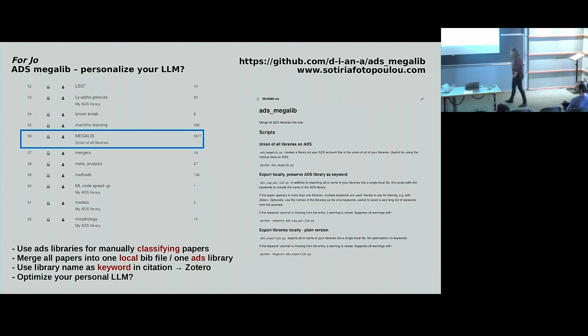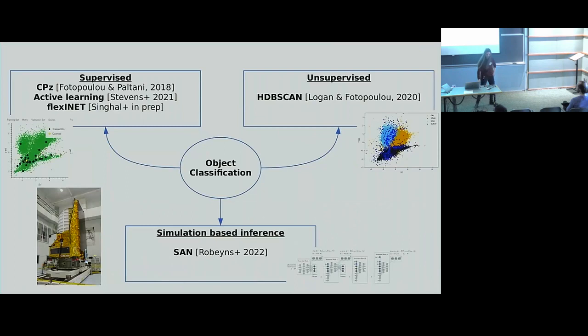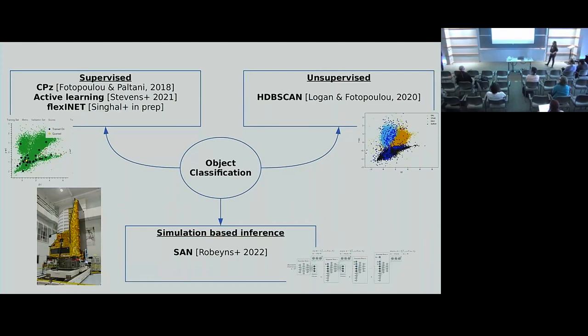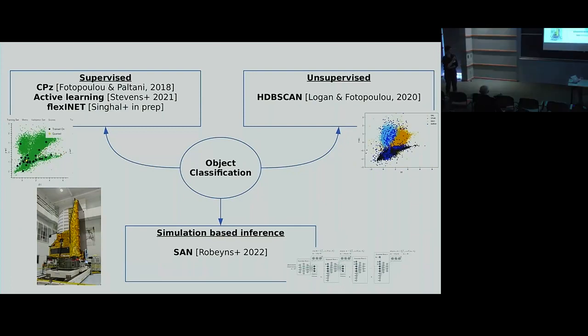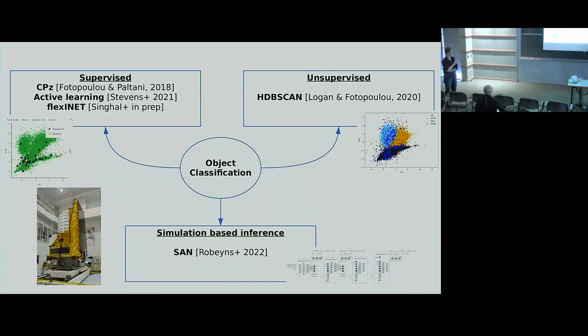we let the weights be a free parameter and be learned during the classification. And lo and behold, it turns out that we are doing a good job. One minus the other is the best way to classify sources. So just to show you how the PDFs look like. And here on the top you have a galaxy, in the bottom you have a star. The SEDs are not going to tell you too much, one versus the other.